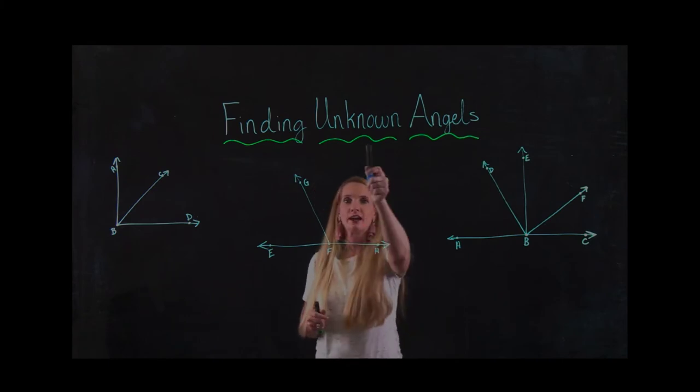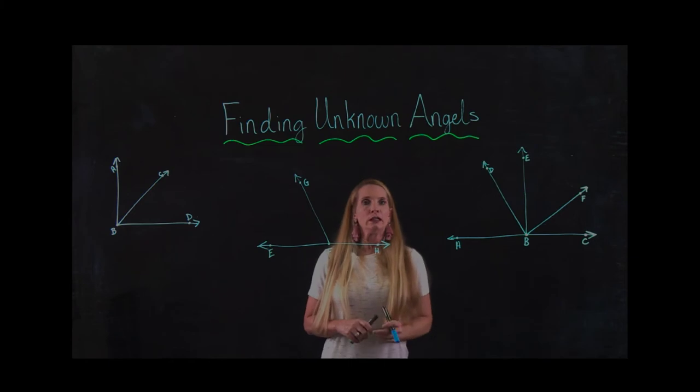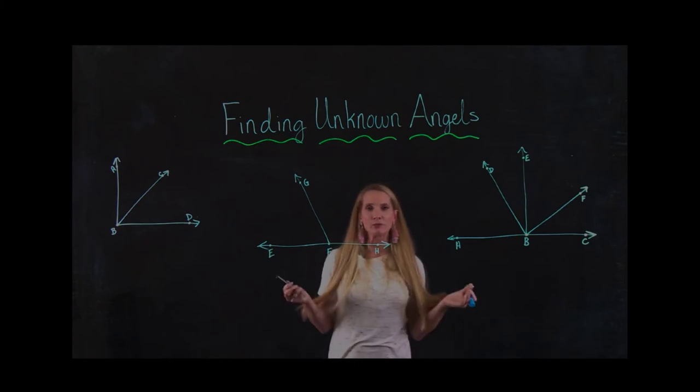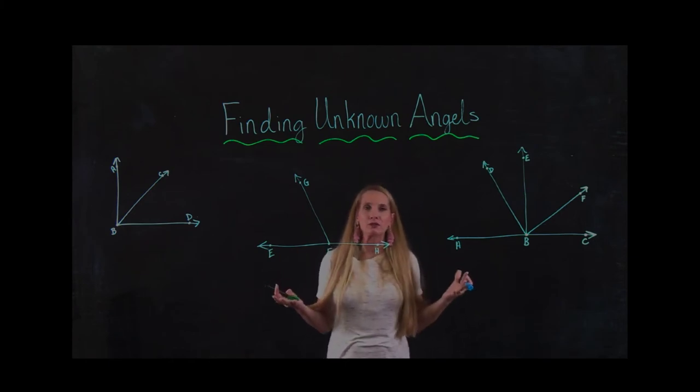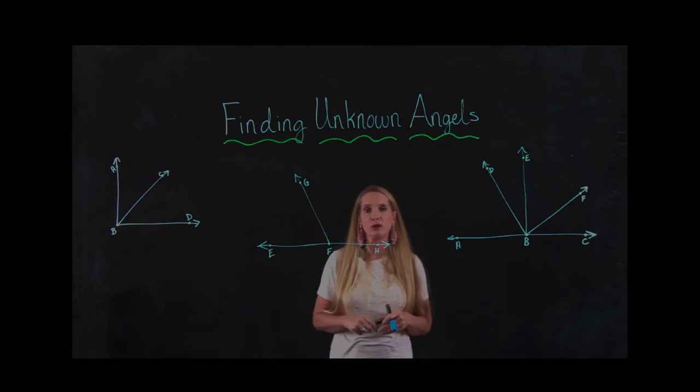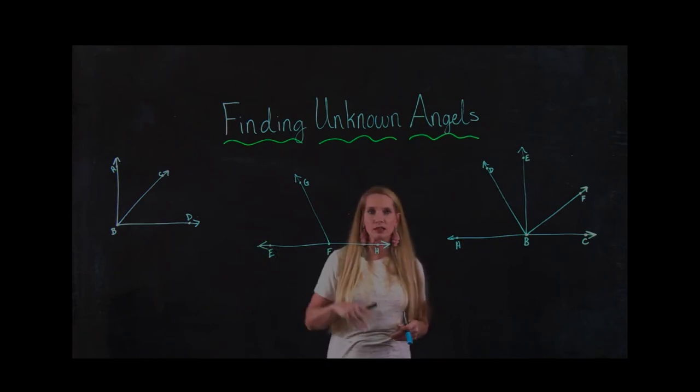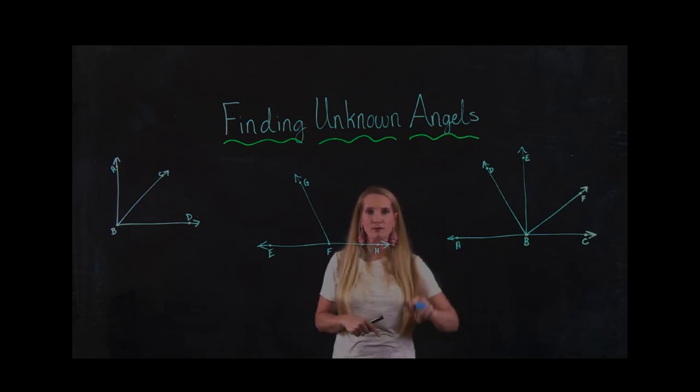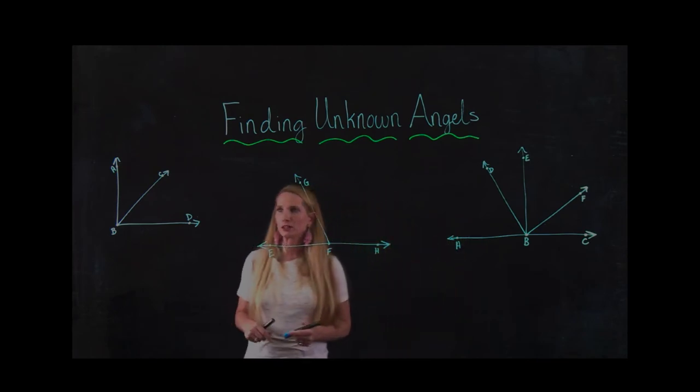Now we're going to look at finding the unknown angles. So we've given a protractor and we know that we can use the protractor to find one angle, but what if it doesn't allow us to find the unknown? If you're looking at finding the unknown, we're going to start with the easiest, a little harder, and then move to the hardest one. So let's look at the first problem.